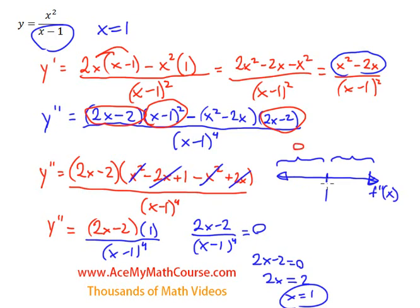So let me plug in 0 for x. So f double prime of 0 would be 2 times 0 minus 2 over 0 minus 1 to the 4. So up top here in the numerator, 0 minus 2 is negative 2. Negative 1 to the 4 is positive 1. So that's a negative value. So the graph of the function is concave down in this area to the left of the asymptote.